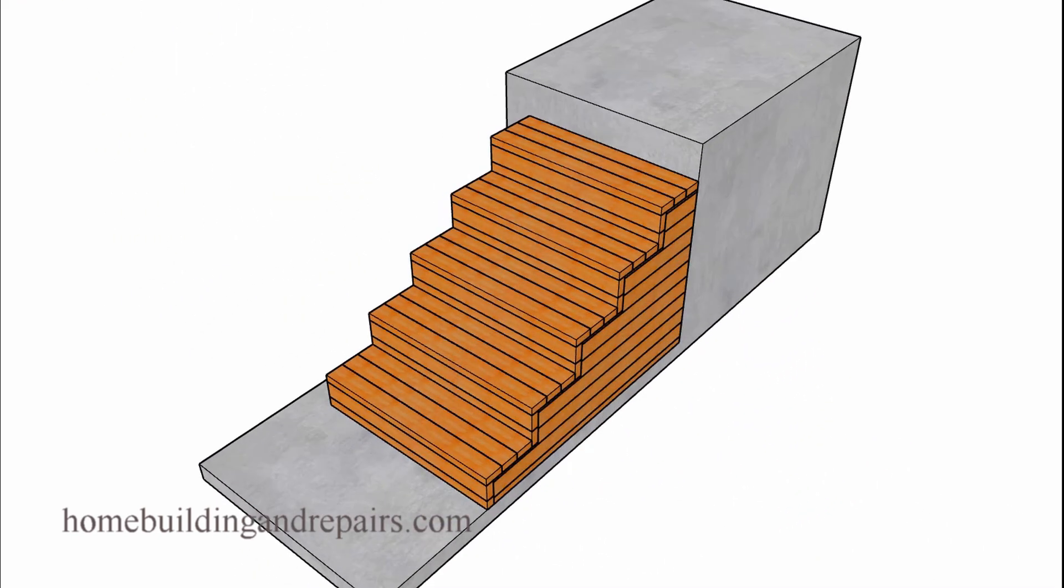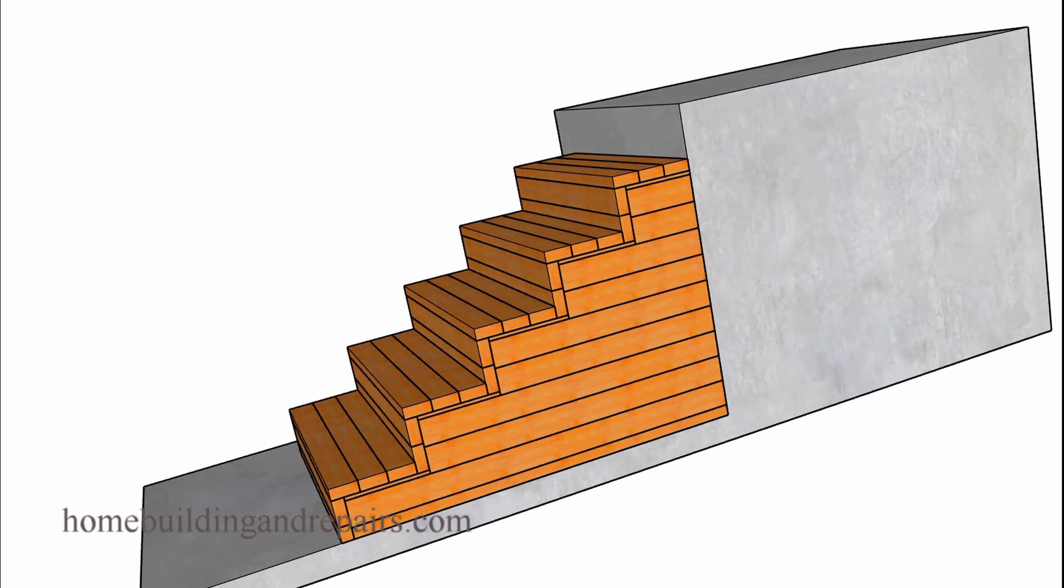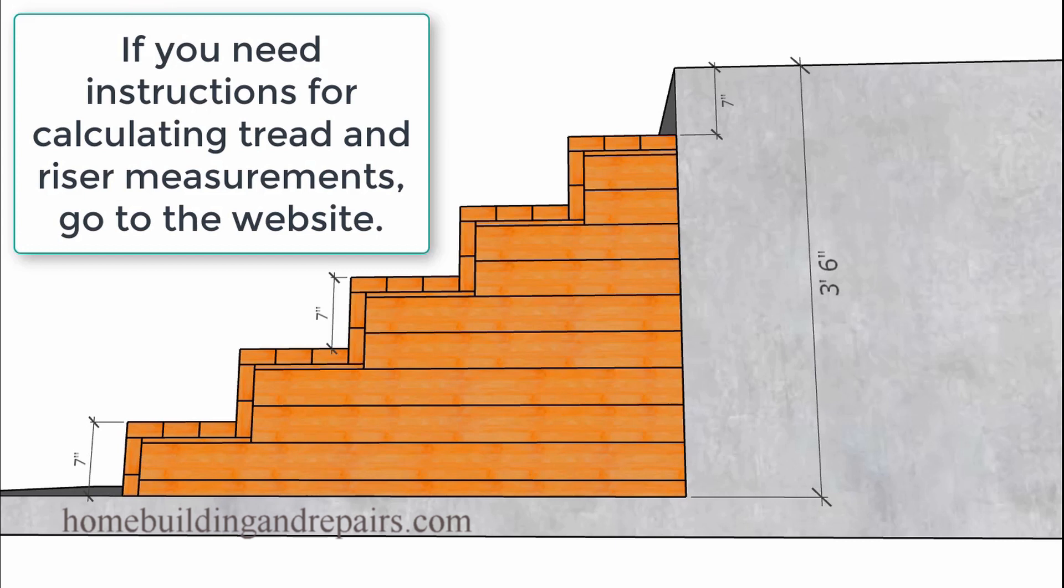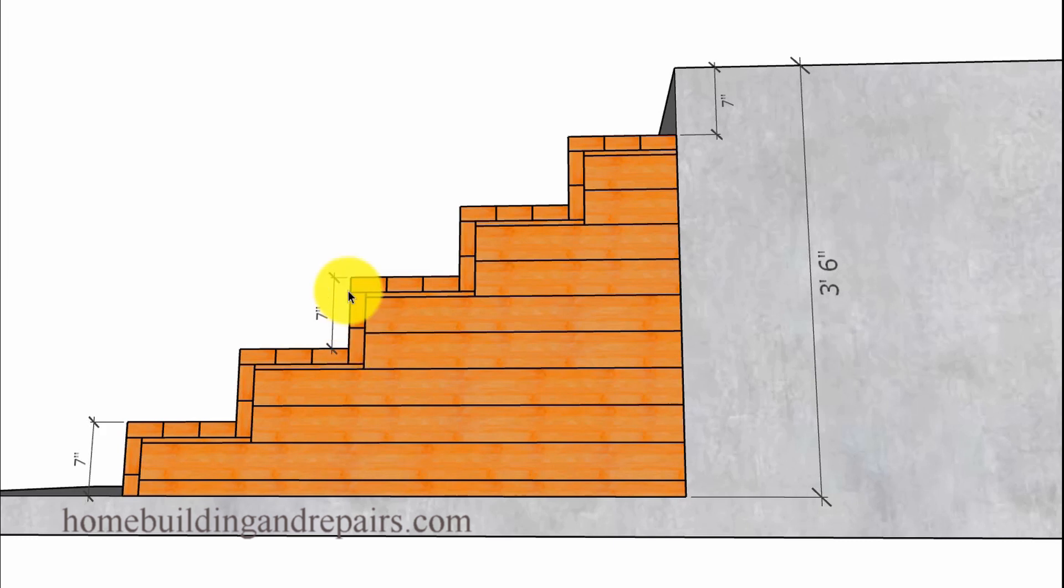And again, entirely out of 2x4. And you can use screws or nails to attach everything together. To give you some measurements here: 7-inch risers, 10.5-inch wide treads. If you want to leave an eighth of an inch gap between everything, then the risers can be a little taller and the treads can be a little wider.